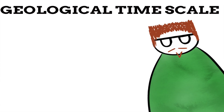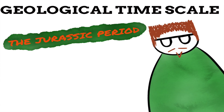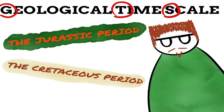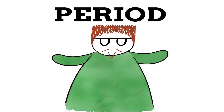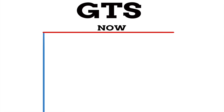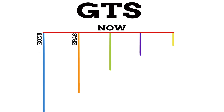It's from this geological timescale we get things like the Jurassic period and the Cretaceous period. A period on the GTS is just one small category of the whole thing — the GTS is broken up into different smaller intervals of time. In layman's terms, there's a big span of time going up to now, and within it are progressively smaller intervals. From biggest to smallest, they're called Eons, Eras, Periods, Epochs, and Ages.